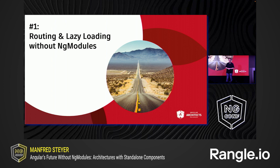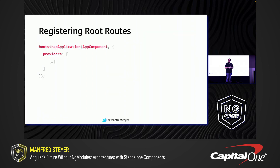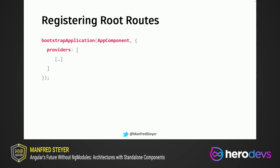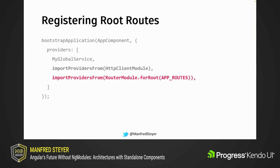Let's talk about routing, lazy loading — all of this without ng modules. When going with standalone components, you don't need an app module anymore. You can just bootstrap your standalone component by pointing bootstrap application to your app component. When doing so, you can provide some providers — those are the providers you used to put into your app module before. And you could use the bridging function, import providers from, which allows you to import providers from existing modules — for instance, for the router module configured with forRoot. With import providers from, you just get them over into the world of standalone components.